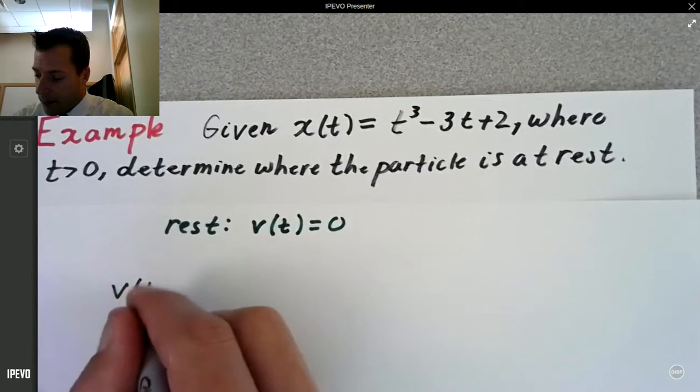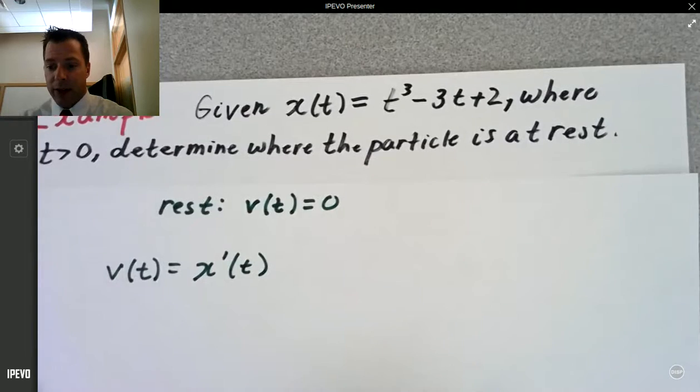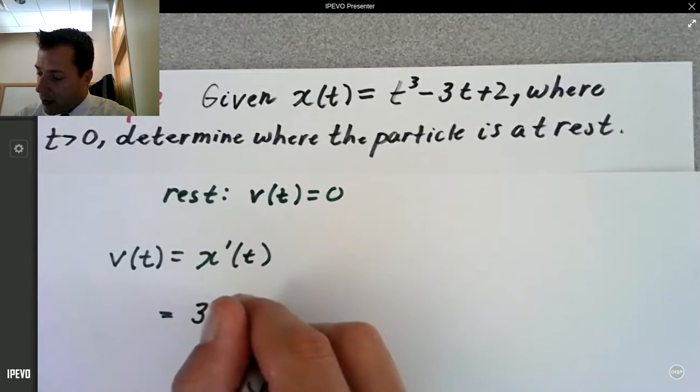v of t is equal to x prime of t, right? So let's take the first derivative of our function. That's going to be 3t squared minus 3.